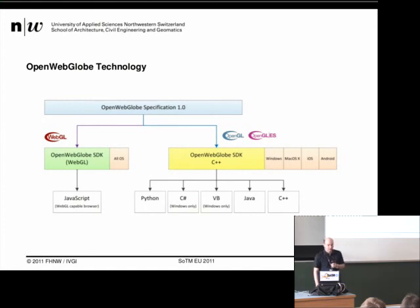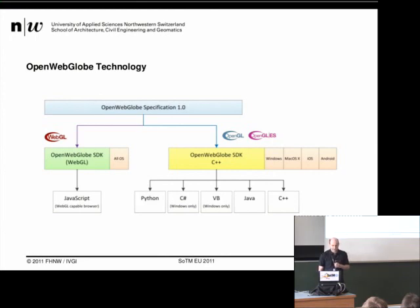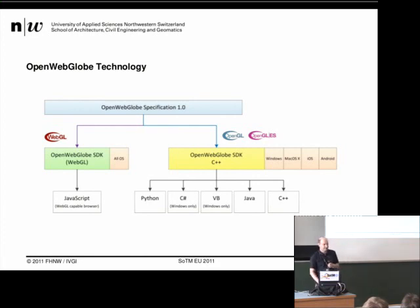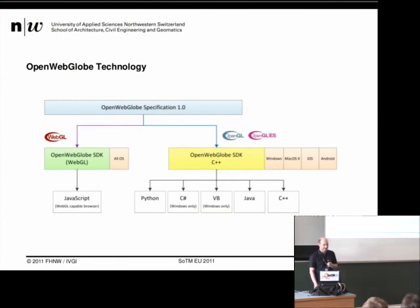What's the OpenWebGlobe technology? It's in two parts — basically two branches. One branch is the WebGL branch. The big advantage of this branch is it runs on all operating systems supporting a compatible browser. So we only have to write one code and it really runs on all operating systems. I developed under Windows, then switched to macOS, then to Linux, and it really works great. So we don't have to code special things for the operating system.